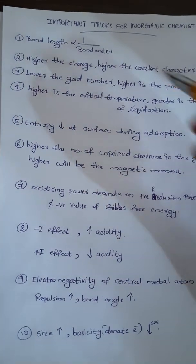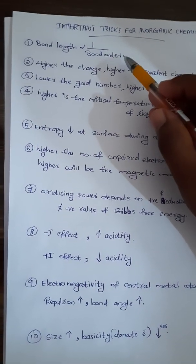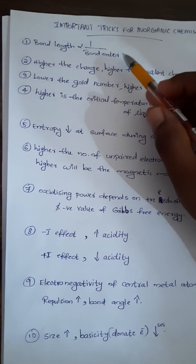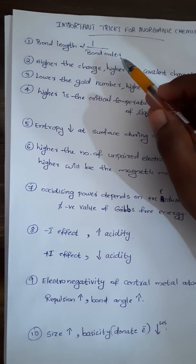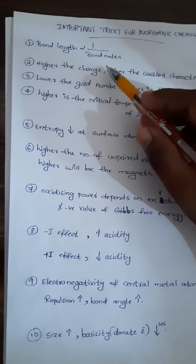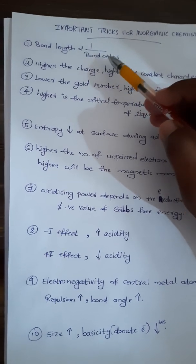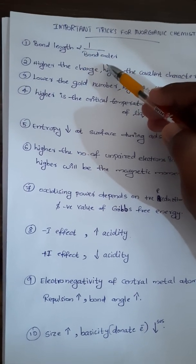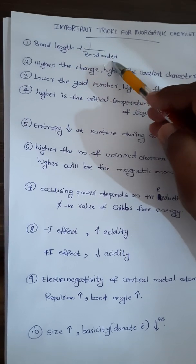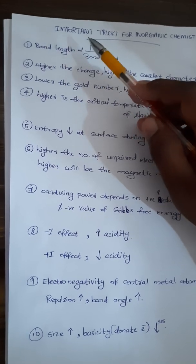I am taking the first point: bond length is inversely proportional to bond order. Which means if bond order is increasing, then bond length will decrease. If bond order is decreasing, then bond length will increase. So bond length and bond order are inversely proportional to each other. That is the first point.